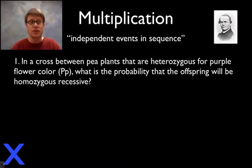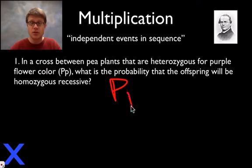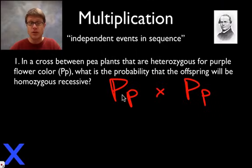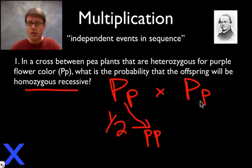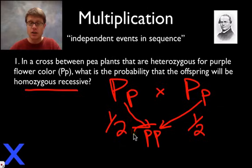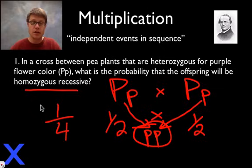Now let's apply multiplication to the work of Mendel. In a cross between pea plants that are heterozygous — so hybrid for purple flower (Pp x Pp) — what's the probability that the offspring will be homozygous recessive? To build a homozygous recessive (pp), we need a little p from each parent. The odds that one parent contributes a little p is 1 in 2, and the odds the other parent also gives a little p is 1 in 2. So we multiply those: there's a 1 in 4 probability of getting a homozygous recessive offspring.